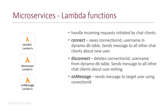Let's look at the microservices, which are Lambda functions in our case. We have three Lambda functions: connect, disconnect, and on-message. These Lambda functions are mapped to various routes in the API Gateway and handle incoming requests initiated by the chat clients. When a chat client initiates a connect with the API Gateway, the connect Lambda function gets invoked. This function saves the connection ID and username in the DynamoDB table and sends a message to all other chat clients about the availability of this new user.